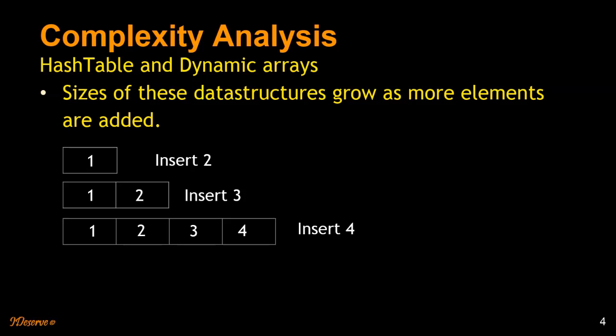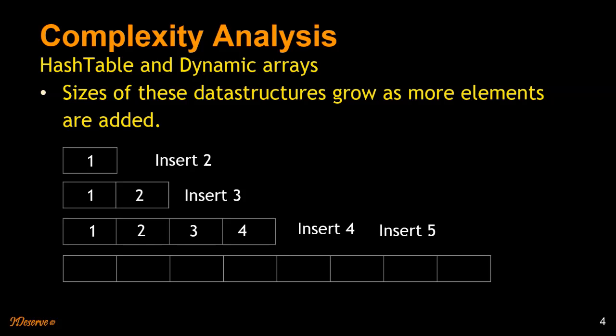On average, we require constant time for all insertions. If we insert 5, we double the array size, copy elements 1, 2, 3, and 4, then insert 5 — that's 5 operations. But inserting up to 4 only required constant time. Then inserting 6, 7, and 8 are all constant time again.